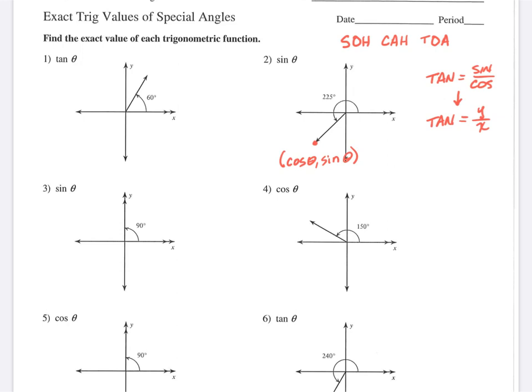So let's look at number one. Let's imagine that we have a terminal side of 60 degrees. What I would like to do is to draw the reference triangle, which gives you the right triangle to the x-axis.